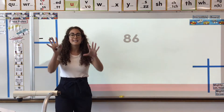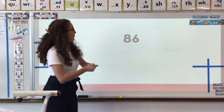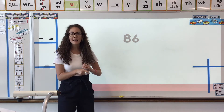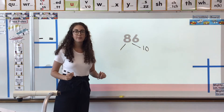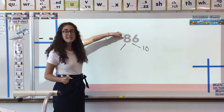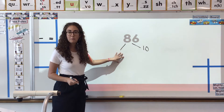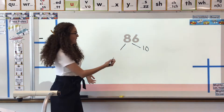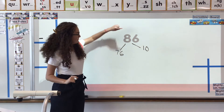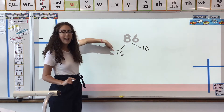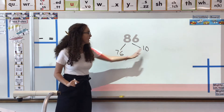Now we are going to take out a 10. I want you to just tell me the answer out loud. We've got 86. If we take out a 10, what will be left? We had 8 tens and we just took 1 away. We'll have 7 tens left, and nothing will happen with the ones. So what will be left over? 76 — because there's 1 less ten, because we took 1 out.